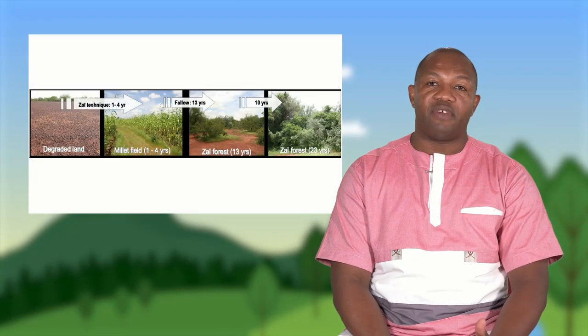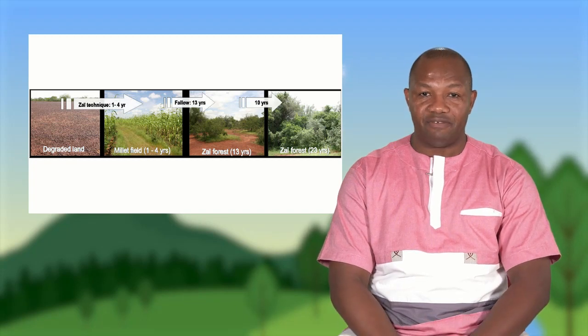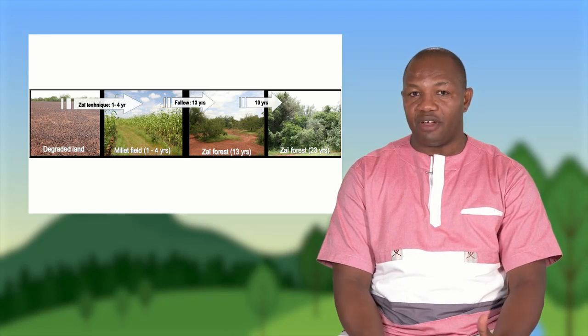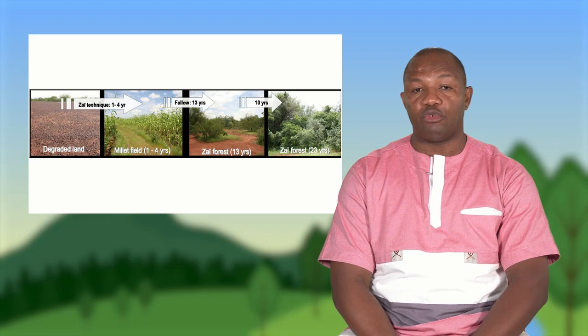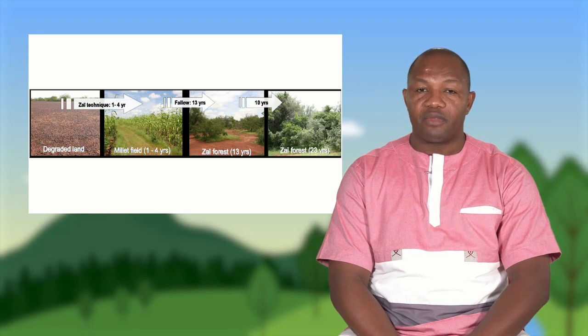En quoi le ZAÏ peut-il être considéré comme un système d'ingénierie écologique par des ingénieurs de l'écosystème que sont les termites ? Au niveau du ZAÏ, il existe deux types : le ZAÏ agricole et le ZAÏ forestier. Dans le cas du ZAÏ agricole, le but est d'augmenter la productivité sur des sols à faible valeur agricole, en optimisant la capacité en eau du sol pour la culture du mil et du sorgho.